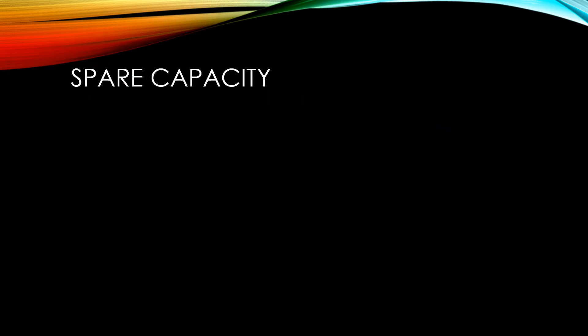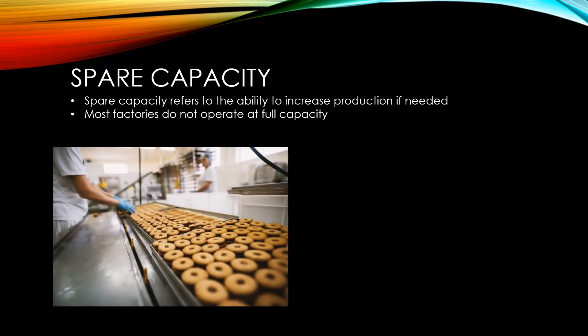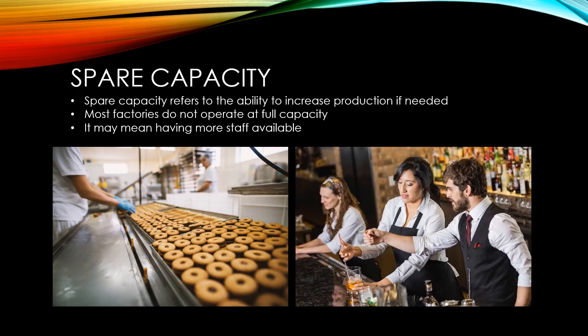Having spare capacity means having the ability to increase production if you need to. Most factories do not operate at full capacity — they tend to aim for somewhere between 75% and 85% capacity. One reason for this is that if there is a problem in the production process, they can adjust without missing their shipment dates and upsetting customers. For some firms, it may mean having more staff available. For a bar, for instance, the more people they have working during a busy period, the more drinks they'll be able to sell.